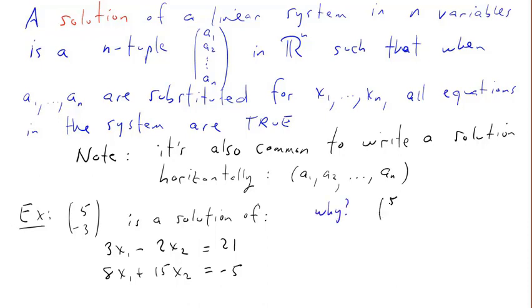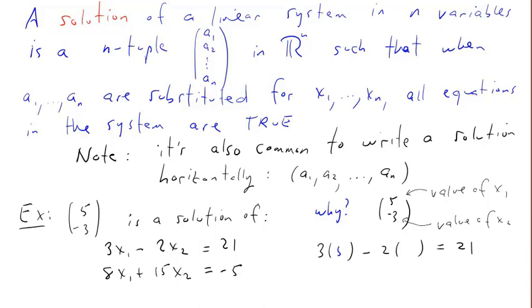Why is that? In (5, negative 3), 5 represents the value of x1 and negative 3 represents the value of x2. When we substitute 5 for x1 and negative 3 for x2 in the first equation, it's true. If we do the same thing in the second equation, we also end up with a true equation. So that is a solution of the system.